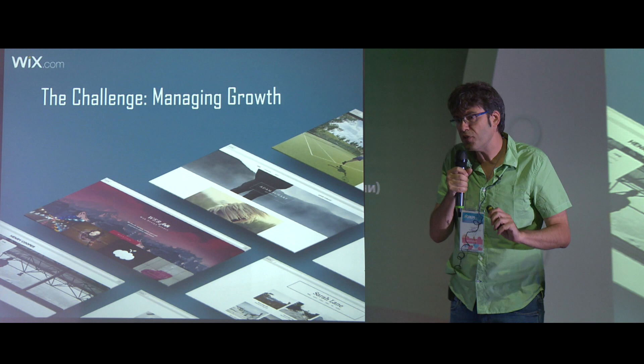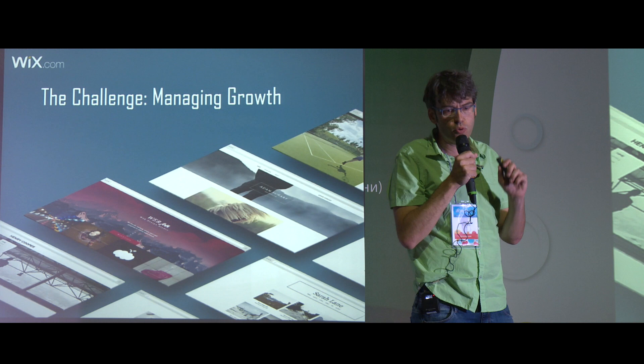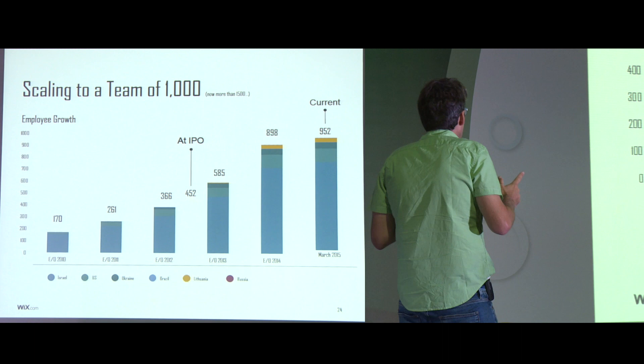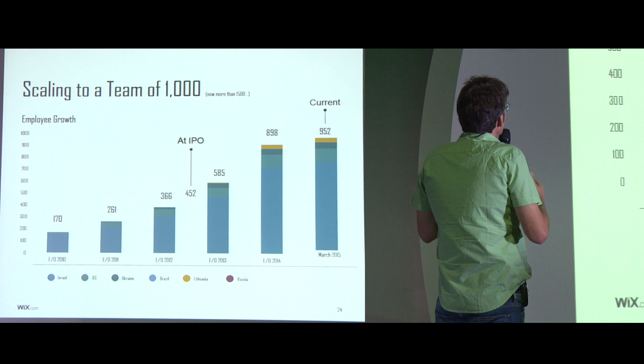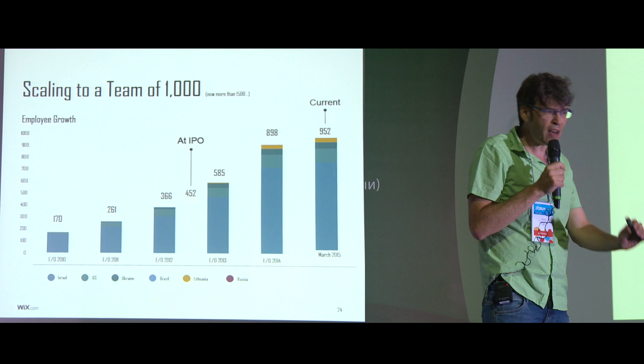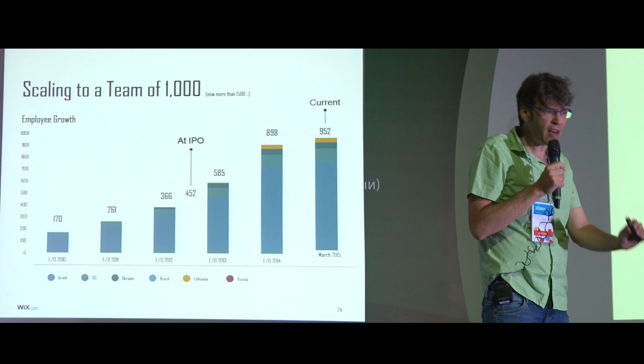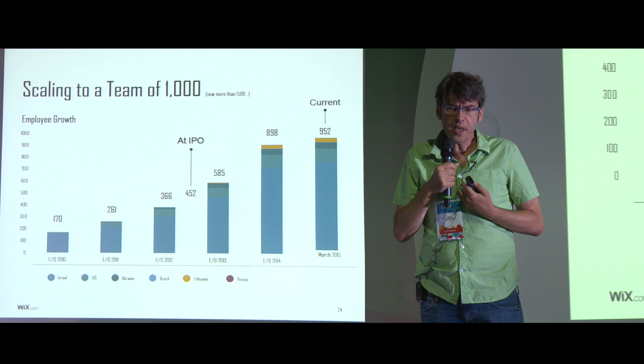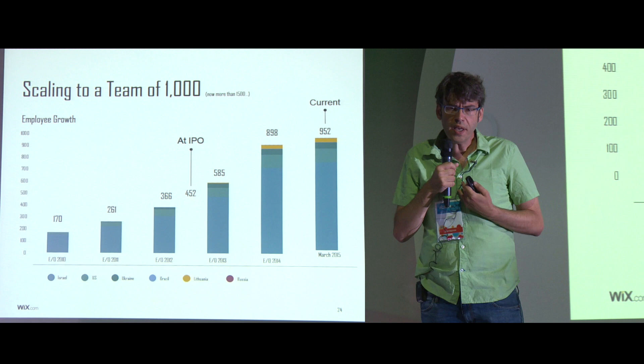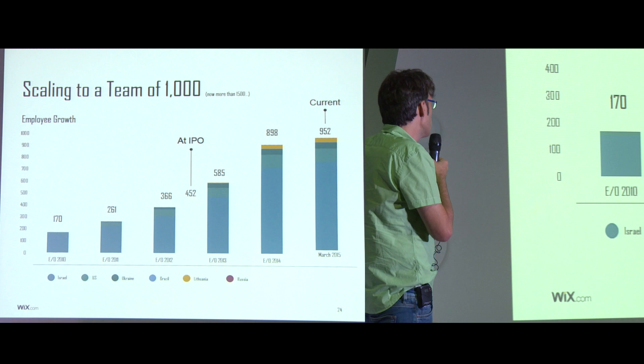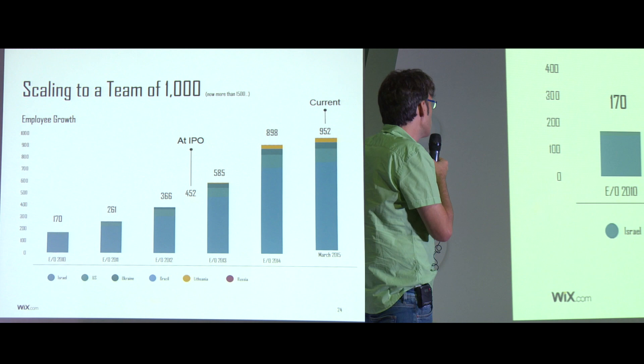Let's talk about managing growth — something you'll encounter at a later stage of your company. This graph shows the growth of Wix from when I joined: 170 people, then 261, about 450 when we IPO'd, 952 in March, and now 1,400 people — about half of them engineers. How do you manage such growth? How do you maintain the core values of innovation, technology, and startup atmosphere when your organization grows to 1,400 people?